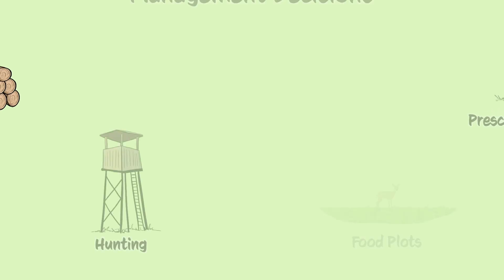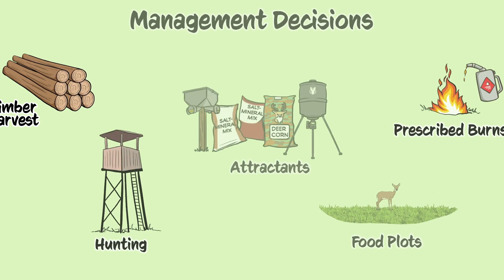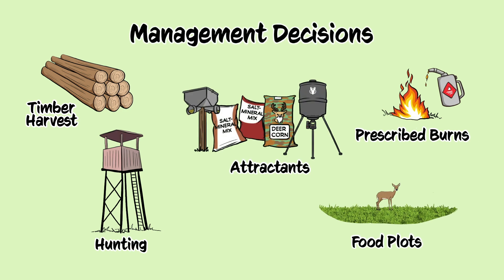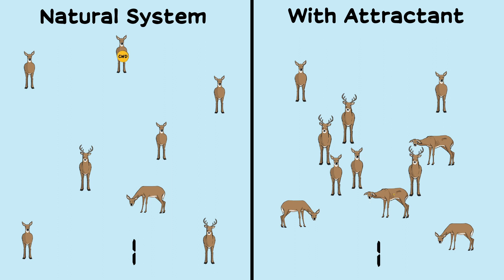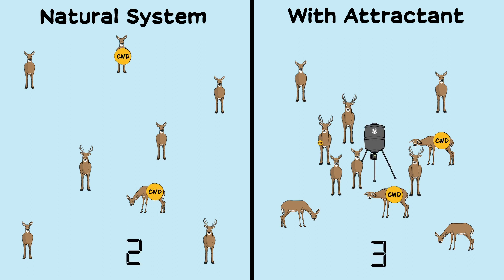Management decisions can affect how deer interact with each other and the landscape. For example, adding attractants like mineral blocks, bait, or feeders can increase deer interactions. An attractant causes deer to cluster around it, leading to more direct contact than in a natural habitat.